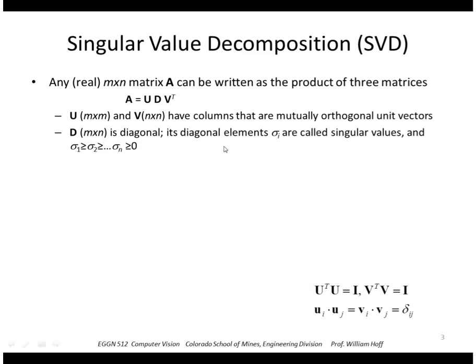The matrix D is diagonal and so its elements σ_i are called singular values and they're ordered in decreasing order, so σ_1 is greater than or equal to σ_2 greater than or equal to σ_n, and they're all positive or 0.